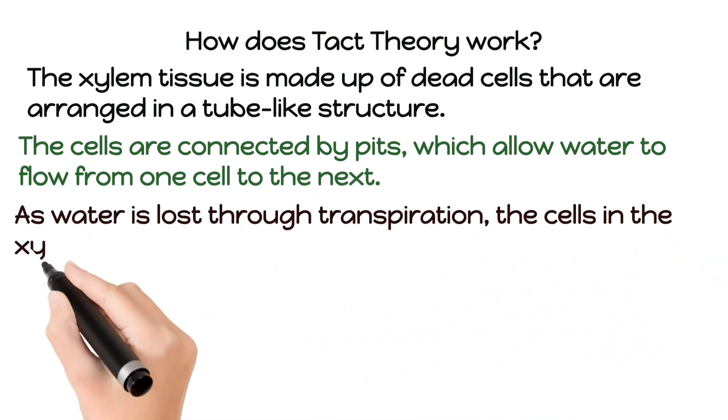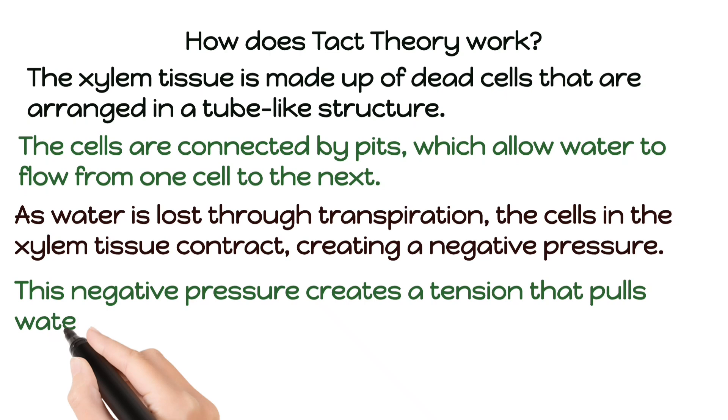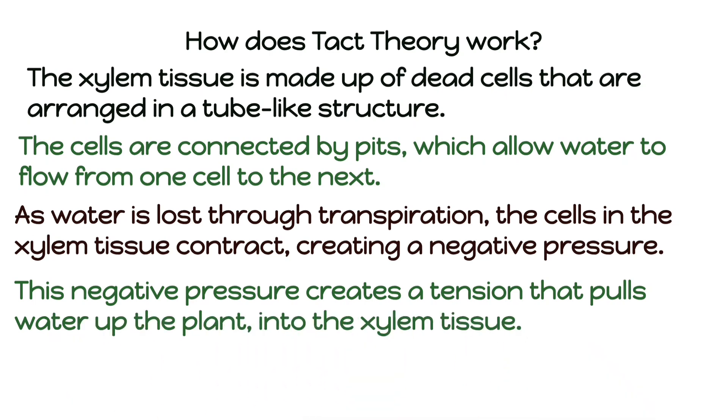As water is lost through transpiration, the cells in the xylem tissue contract, creating a negative pressure. This negative pressure creates a tension that pulls water up the plant into the xylem tissue.